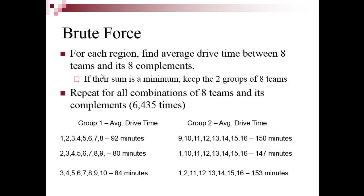Not being a combinatorics expert, I used the brute force method. For each region, I found the average drive time between eight teams and their complement eight, then kept the grouping whose sum was minimum. I iterated through combinations — for example, 92 and 150 for the first, then 80 and 147 for the next, which had a smaller sum, so I replaced it. I used nested loops and ran through 6,435 combinations total.